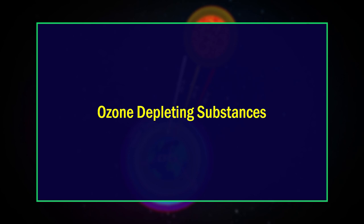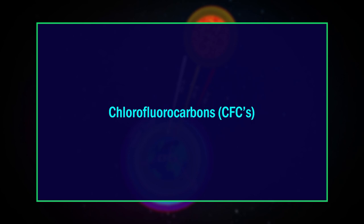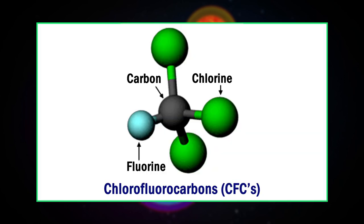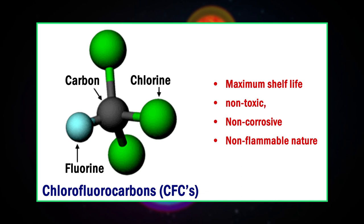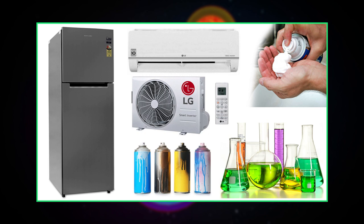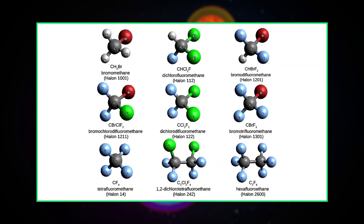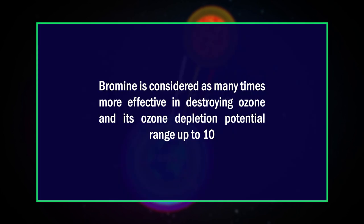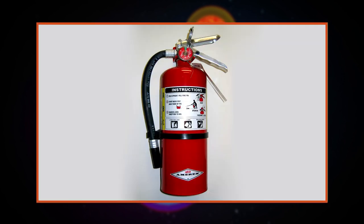Chlorofluorocarbons (CFCs) are ozone-depleting substances composed of chlorine, fluorine, and carbon atoms. Because of their maximum shelf life, non-toxic, non-corrosive, and non-flammable nature, they have been used in refrigerators, air conditioners, spray cans, solvents, and foams. Halons are another group of compounds containing bromine, chlorine, fluorine, hydrogen, and carbon atoms. Bromine is considered many times more effective in destroying ozone.